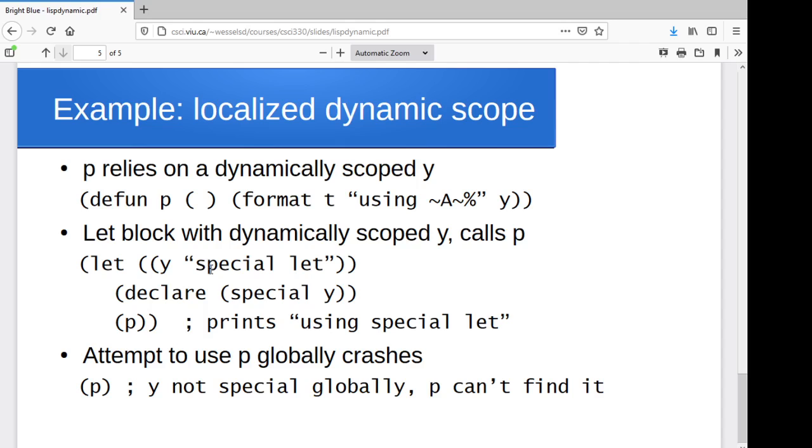So something to keep in mind, it gives you this localized dynamic scope, right? And it's going to have exactly the behavior we just described, where if I say, if I create a variable y and give it some value, I say I want it to be dynamically scoped, I call p, then it's going to use my version of y.